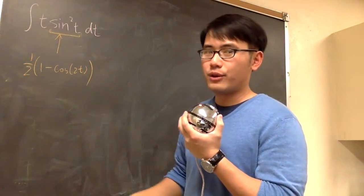Let's integrate t times sine squared t. One of the formulas says for sine squared t, we can write this as 1 half times 1 minus cosine of 2t. This way, you see, the power becomes just to the first power, and then this is much easier to handle.